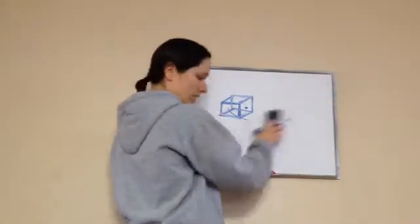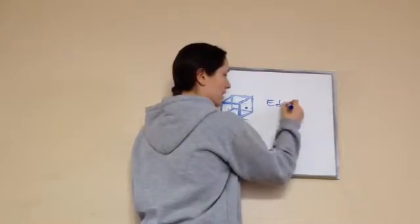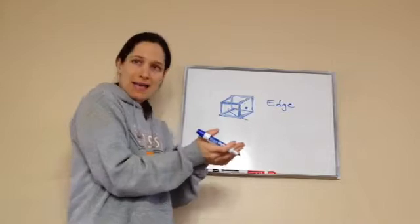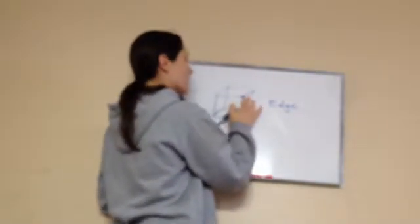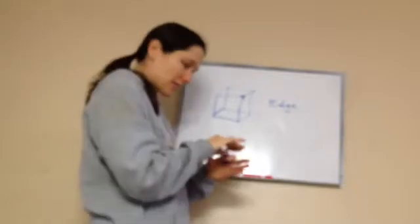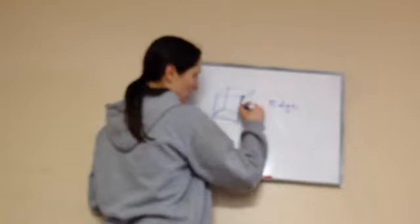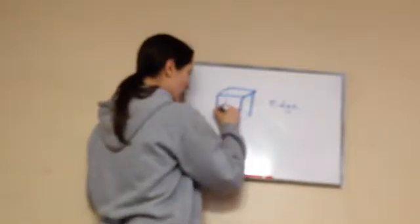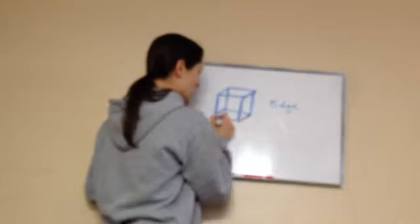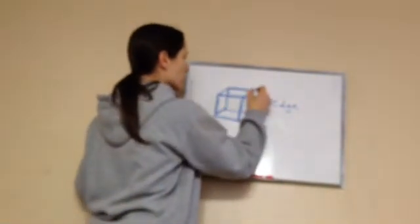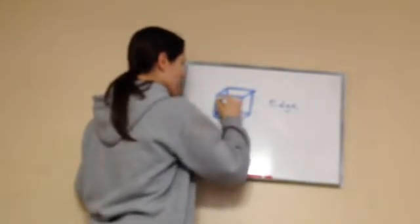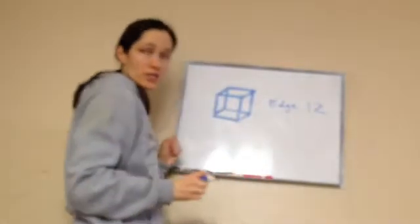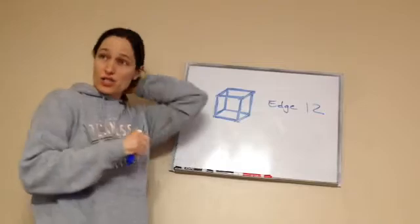The next thing I want to talk about is something called an edge, and it's exactly what you would think. If I'm holding a cube in my hands and looking at a face, the edge is just like if something was about to fall off the edge. Counting all the edges on this cube — one, two, three, four, five, six, seven, eight, nine, ten, eleven, twelve — there are twelve edges on this figure.